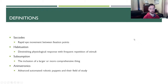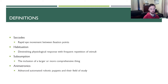A few definitions: Saccades are a form of rapid eye movement — your eyes focus on points and saccades are what happens when your eyes flick between those points; you can't look at both of someone's eyes simultaneously, so your eyes flick back and forth between them. Habituation is a diminishing physiological response to a stimulus with frequent repetition — if somebody makes a loud noise behind you, you might be scared the first time but less so each subsequent time. Subsumption is the inclusion of a larger or more comprehensive thing within something more specific. Animatronics is advanced robotic puppetry and the field of study associated with that.